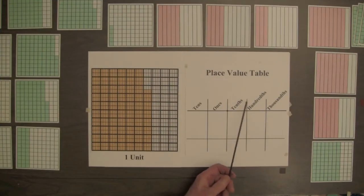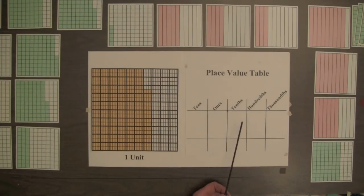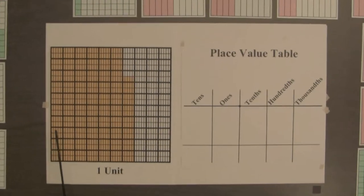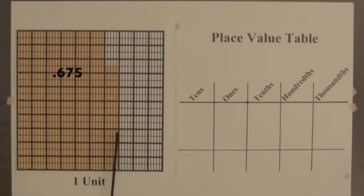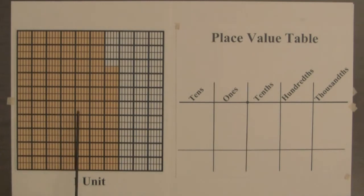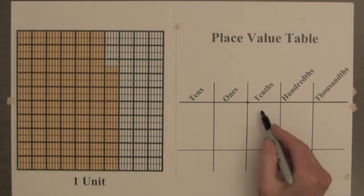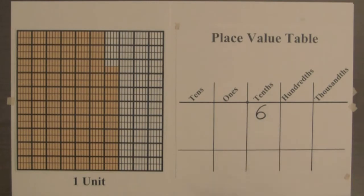This place value table will be used for adding decimals. This decimal square represents six hundred and seventy-five thousandths. There are six full columns — six tenths.